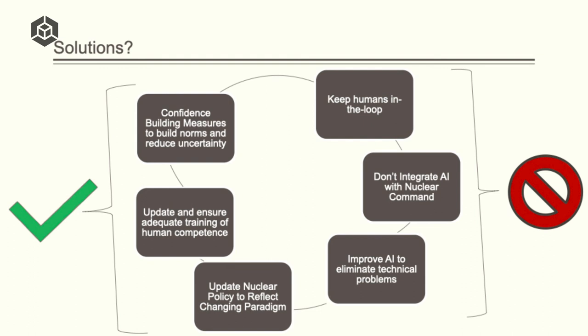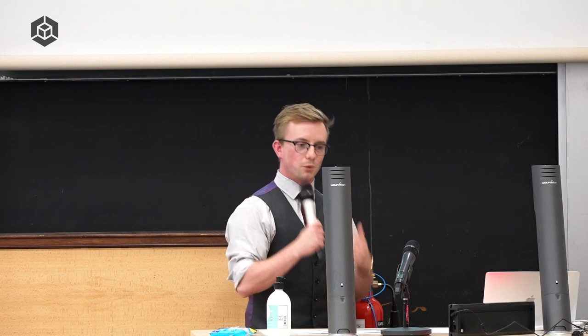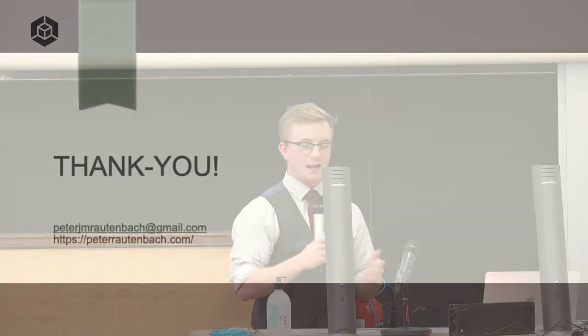And finally, confidence building measures or CBMs basically reduce uncertainty and tensions between nations. They give a clear understanding of where states stand. So, for example, indicating that human hands will only ever be in control of the launch decision, which the UK has done, would be a great start. This is lower impact, but arguably necessary and important to making sure that we can change policy. And with that, I'm actually done perfectly on time. Thank you so much.